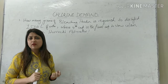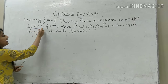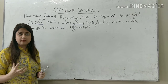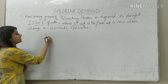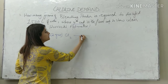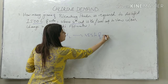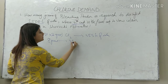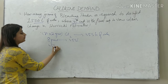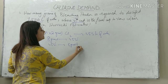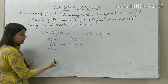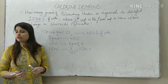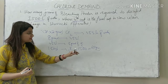Consider this numerical: how many grams of bleaching powder or chlorine is required to disinfect 1500 litres of water, where the 4th cup is the first to show colour change in the Horox apparatus? Using the formula, N = 4, so 4 × 2 = 8 grams disinfects 455 litres. Therefore, for 1500 litres: (8 ÷ 455) × 1500 = approximately 27 grams.